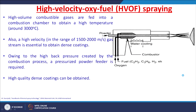In high velocity oxy-fuel (HVOF) spraying, a high volume of combustible gases is fed into the chamber to reach about 3,000°C. A very high-velocity gas stream is also required to obtain dense coatings. Gas velocities of around 1,500 to 2,000 meters per second accelerate the powder from the flame onto the substrate. A pressurized powder bed feeder is required due to the high back pressure from combustion. High-quality dense coatings can be obtained using this technique.